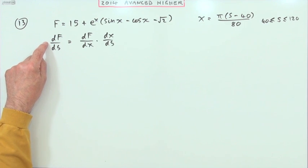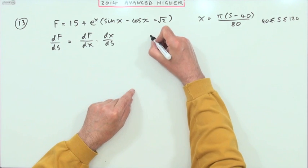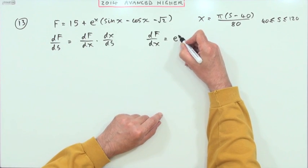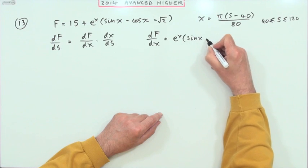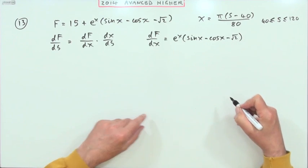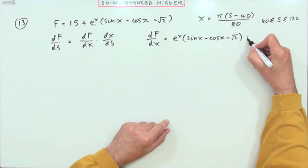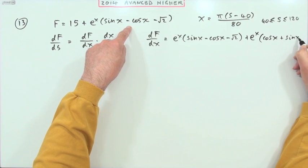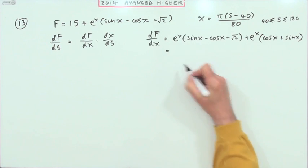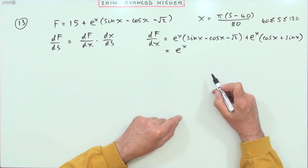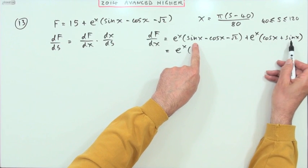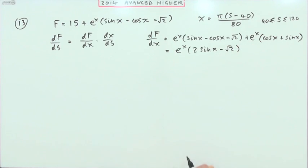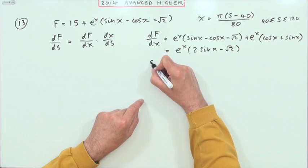I want to find stationary values for df/ds. What's df/dx? I've got a product, so differentiating: the first term e^x stays, leaving all of the second part, then leaving the first and differentiating the second gives e^x times (cos x + sin x). Taking out the e^x and gathering terms, the cos x disappears, leaving two sin x minus root two. So df/dx = e^x(2 sin x − √2).